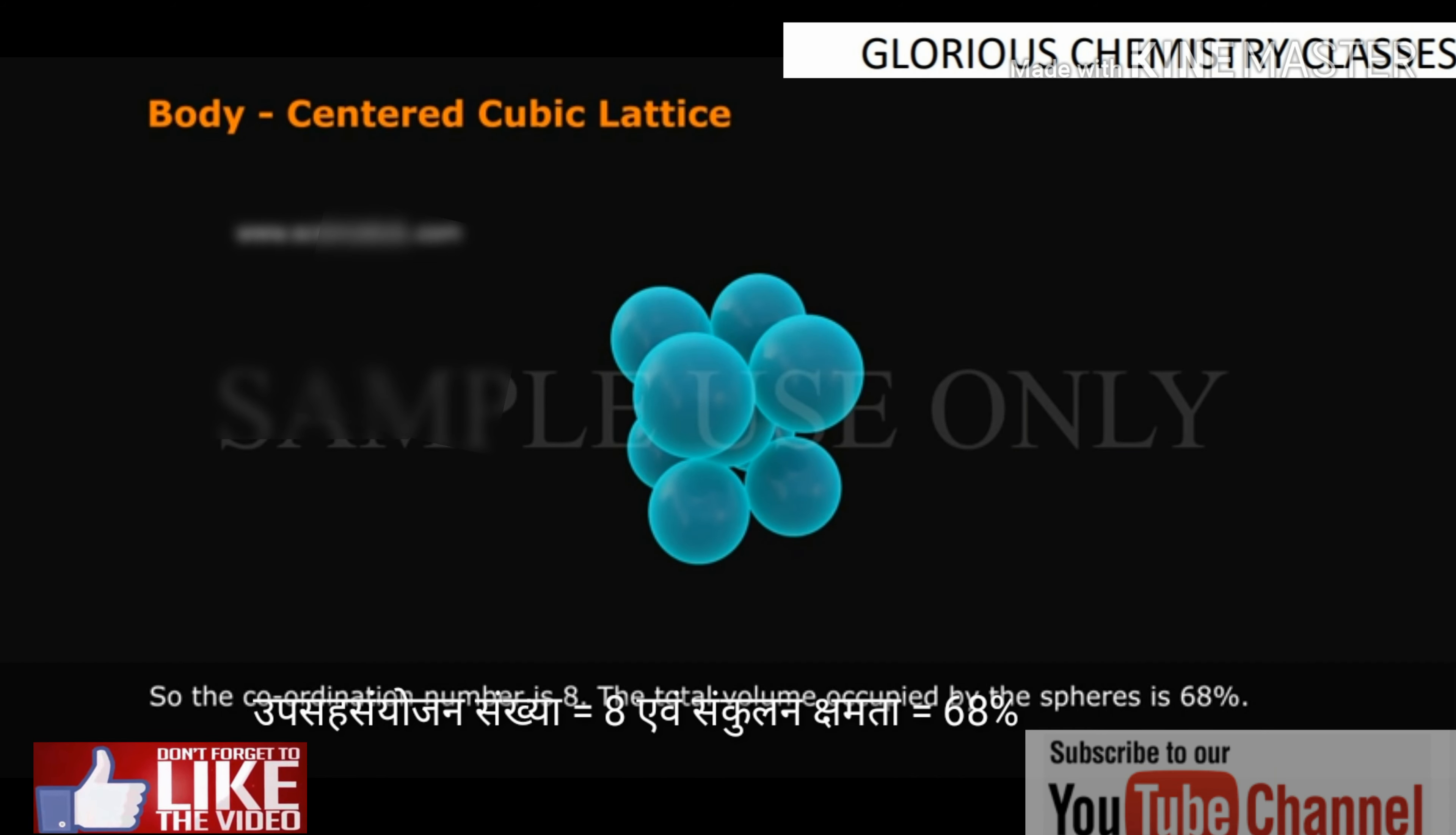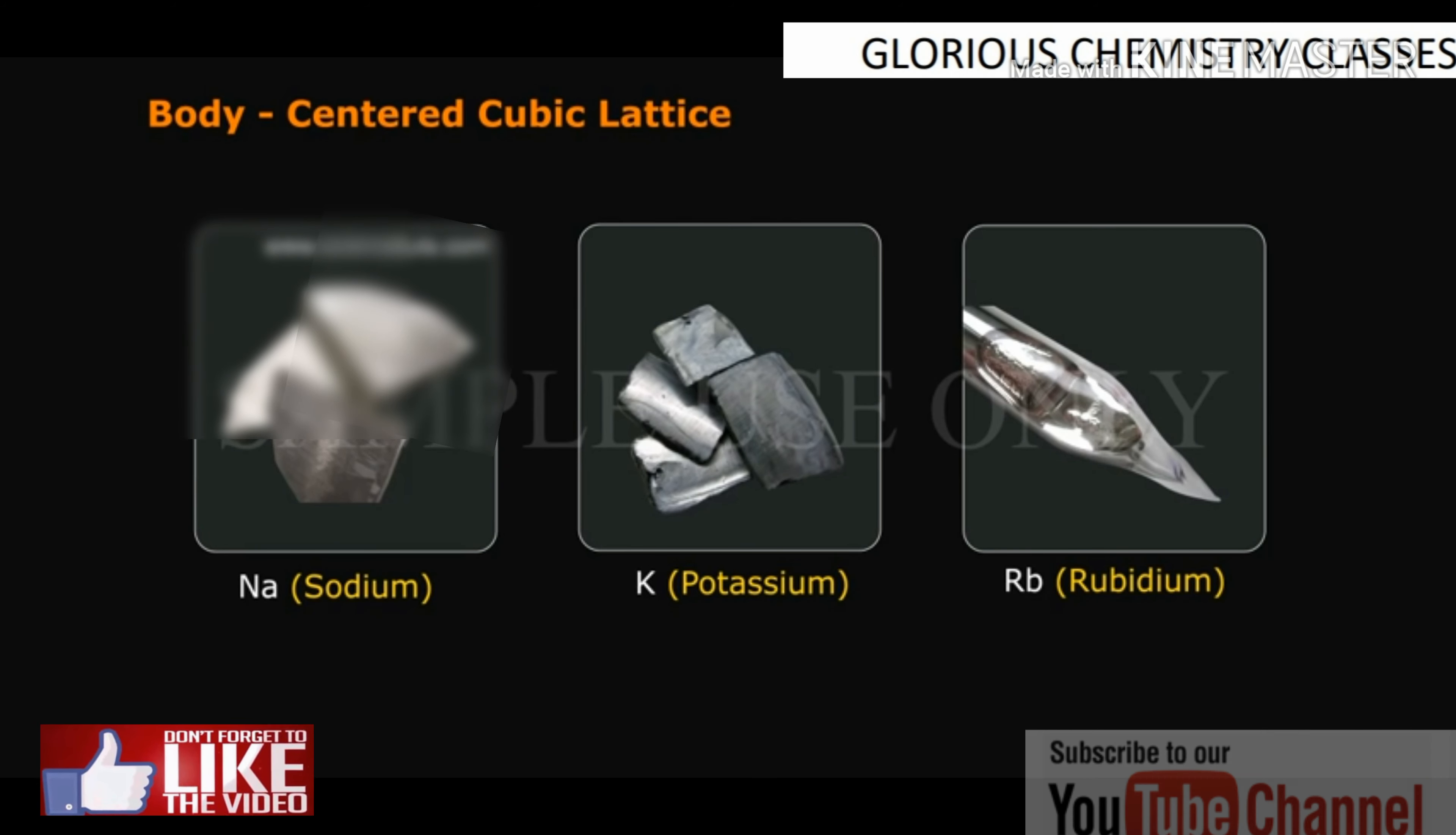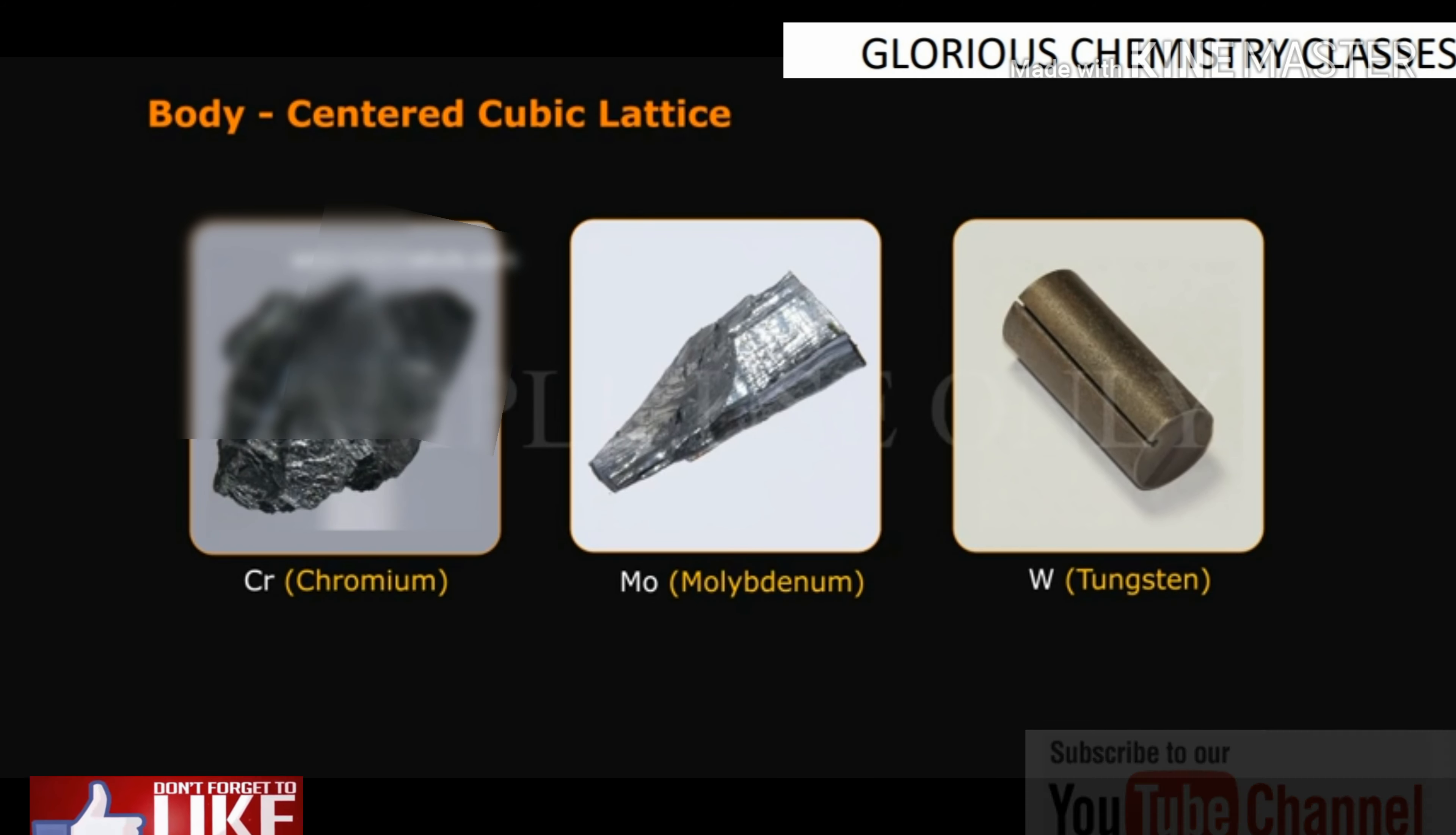The total volume occupied by the spheres is 68%. Examples: sodium (Na), potassium (K), rubidium (Rb), chromium (Cr), molybdenum (Mo), tungsten (W), etc.